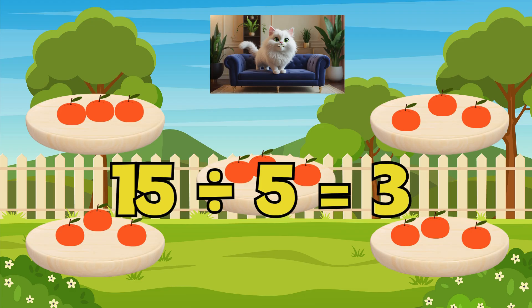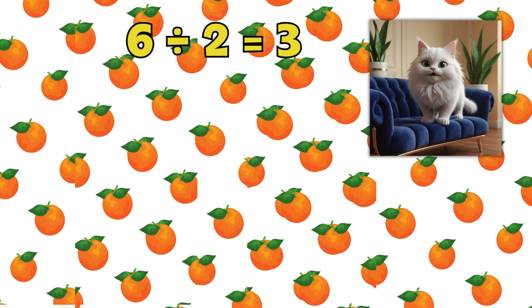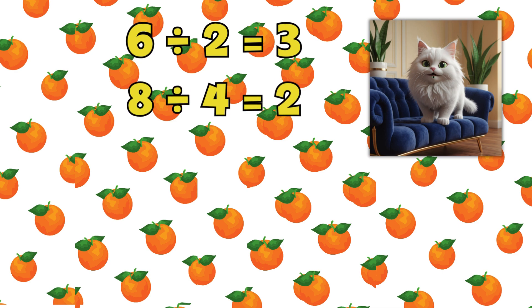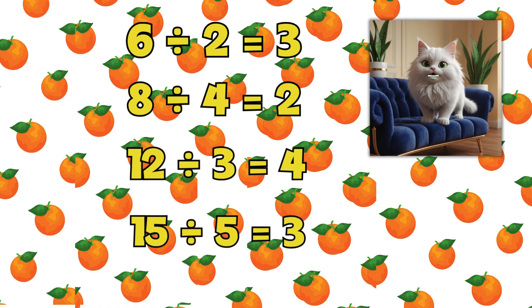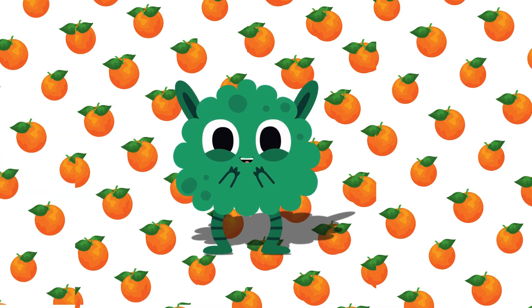You're doing amazing! Let's review our division equations — say them with me: 6 divided by 2 equals 3, 8 divided by 4 equals 2, 12 divided by 3 equals 4, and 15 divided by 5 equals 3. I love mandarins!